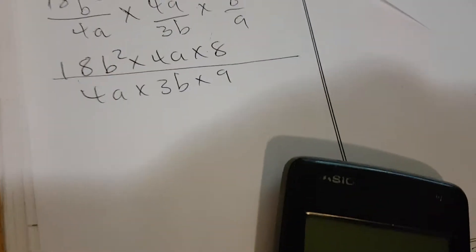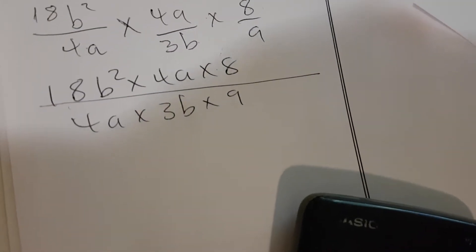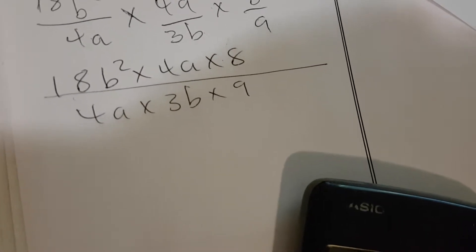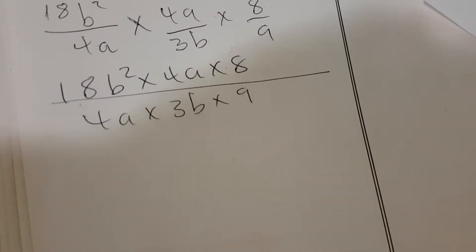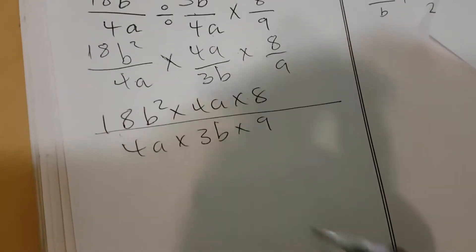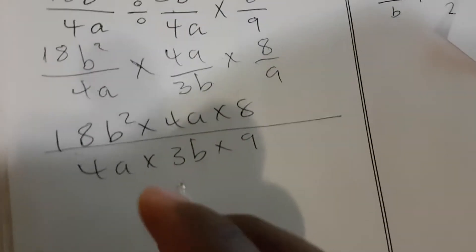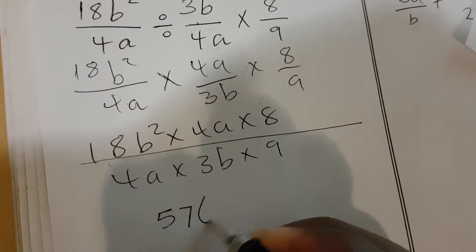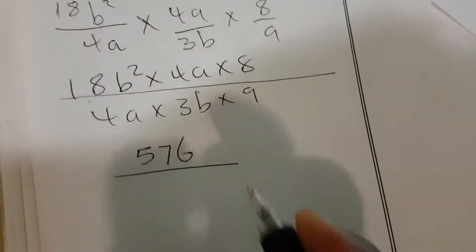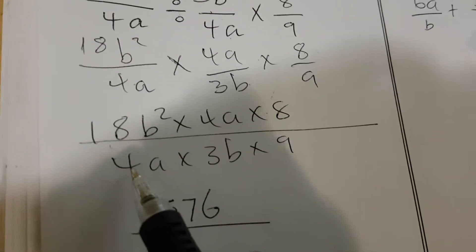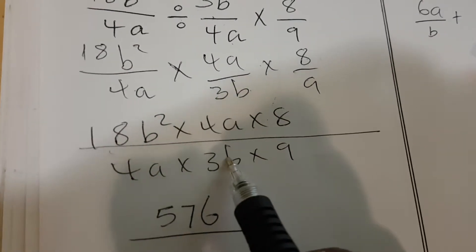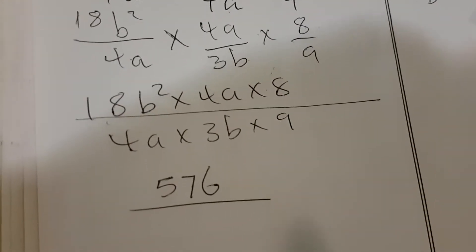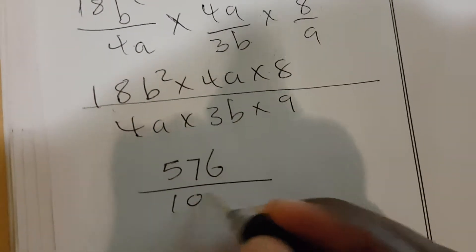Starting with the numbers: 18 multiplied by 4 multiplied by 8 gives us 576. On the denominator, 4 times 3 is 12, and 12 times 9 is 108.